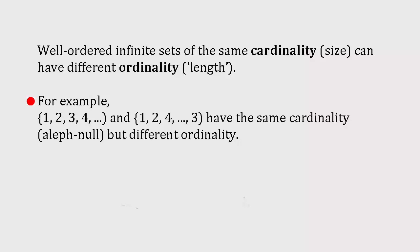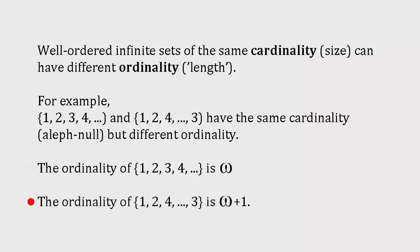Mathematicians call the smallest infinite ordinal, the shortest length of the set of all natural numbers, omega. The ordinality of the set {1, 2, 4, ..., 3}, where the three is placed after all the other natural numbers, is one greater, namely omega plus 1.